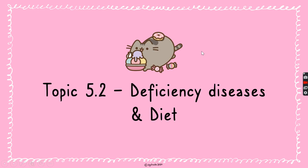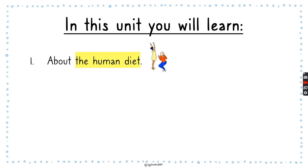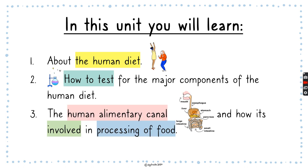Good morning, everyone. Today we are going to cover topic 5.2, deficiency diseases and diet. In this unit, we are still covering topic 5, animal nutrition. So we are still learning about the human diet and how to test for the major components of the human diet, which we did in previous lessons.